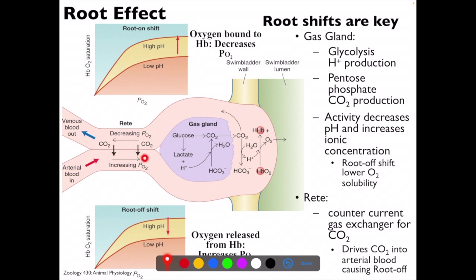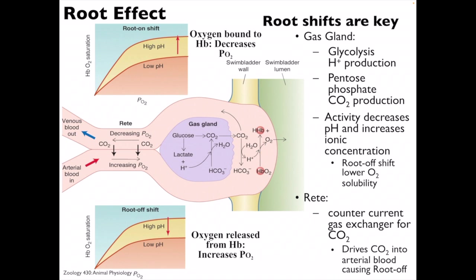CO2 is produced in the gas gland and, because of countercurrent flow, it circulates and increases in concentration. Because of the root effect, there is a buildup of acid driving oxygen off the hemoglobin, so the hemoglobin leaves with low oxygen content. Eventually, enough oxygen builds up that the gradient becomes favorable for diffusion to occur, and the oxygen goes into the swim bladder. That's how we fill the swim bladder against a tremendous concentration gradient.